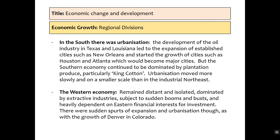However, there are regional divisions that add complexity to this economic growth. It isn't accurate to say America experienced an unprecedented boom across the board, because the South — yes, there is urbanisation in places like Texas, Louisiana, New Orleans, Houston, and Atlanta — but it continues to be dominated by plantation systems, particularly King Cotton, with problems like sharecropping. Urbanisation moves very slowly and on a much smaller scale than in the northeast. The western economy is very distant and isolated — connected by railroads, but heavily dependent on financial interest and investment from the east.